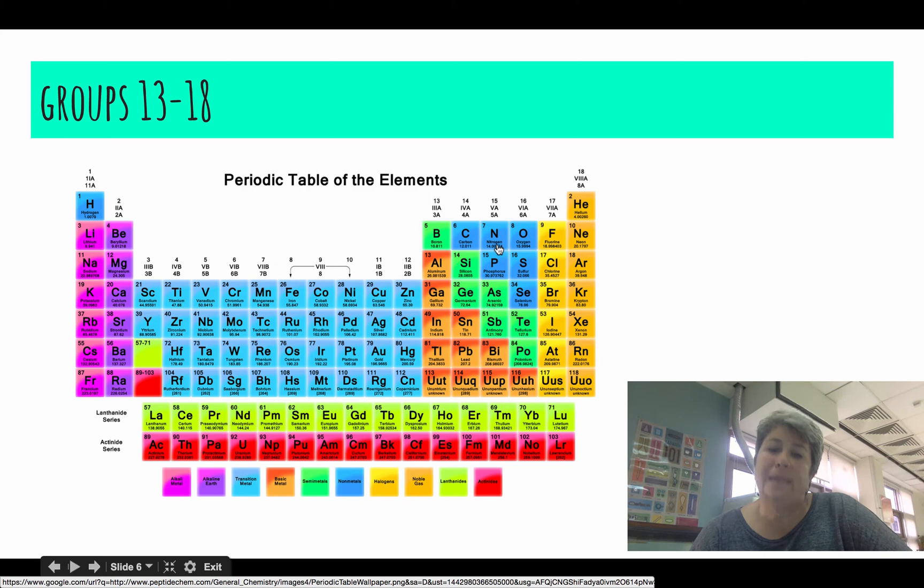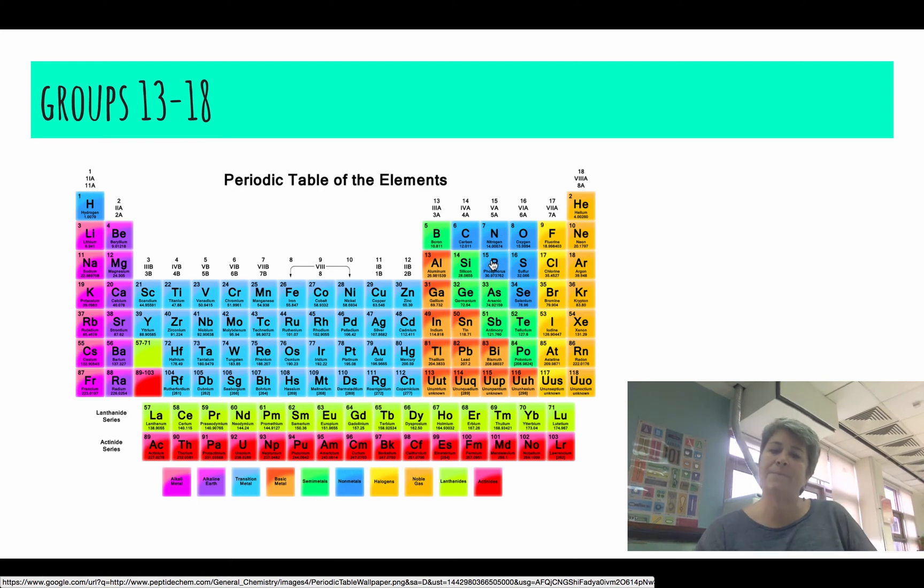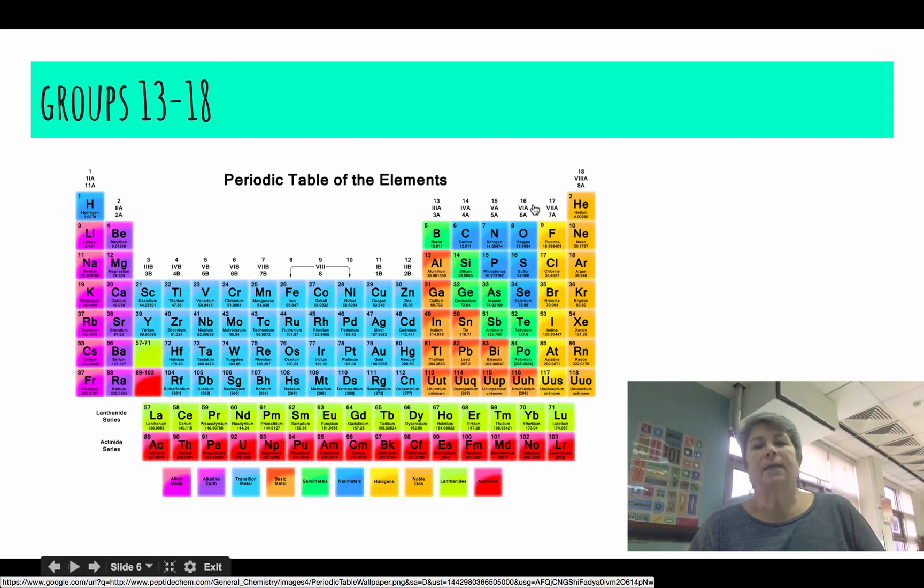Then, in group fifteen, they have five valence electrons. This is also called the nitrogen family because here's nitrogen at the top of the column. And then, group sixteen, they have six valence electrons that can be available for bonding. And what do you think they're called? Oxygen family. Very good.